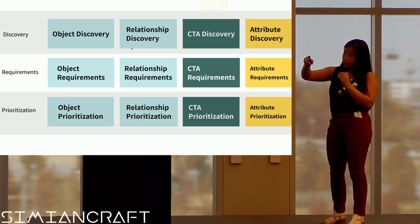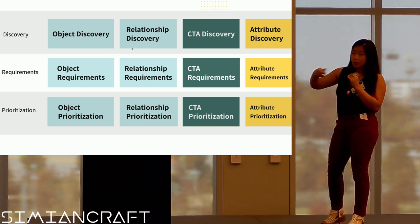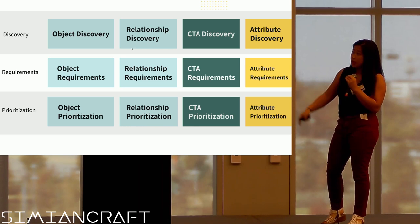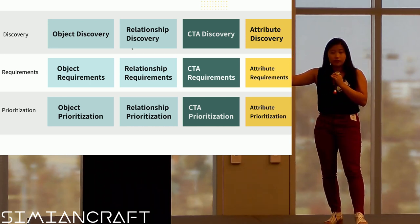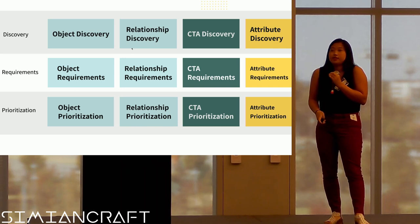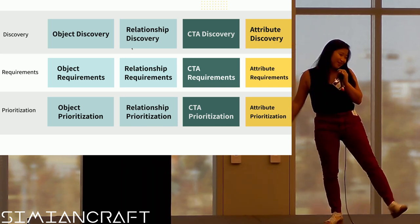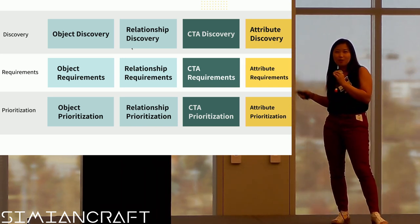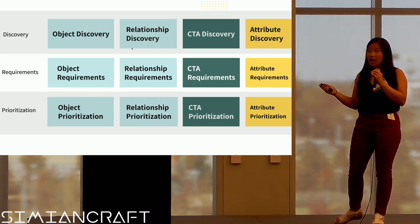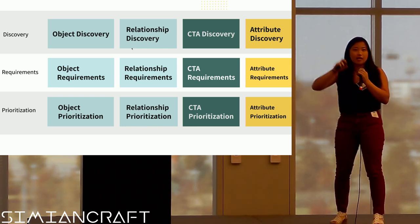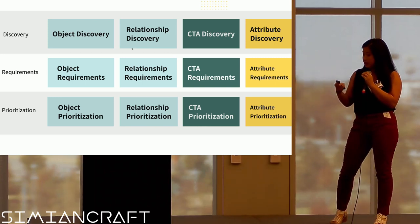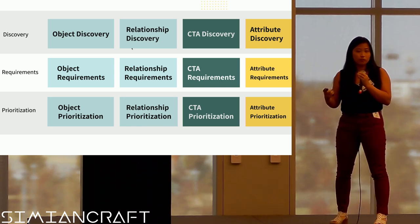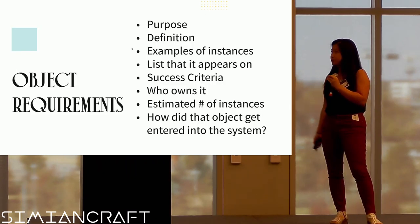Here are a few other things you can consider if you have more time. There are three core phases: discovery, requirements, and prioritization. We go through objects, relationships, CTAs, and attributes for each phase in the ideal world. I love thinking about what kind of capabilities we have. I have been doing that on one of my clients and it has been such a game changer because we have so much more information than we ever had before.